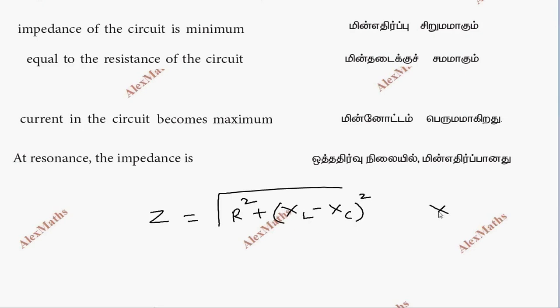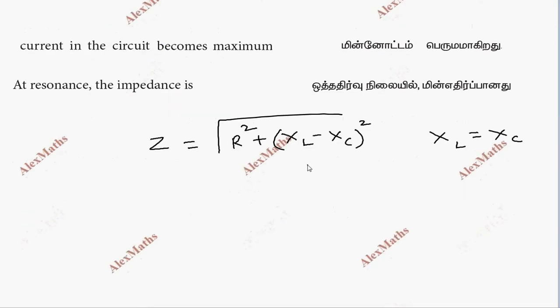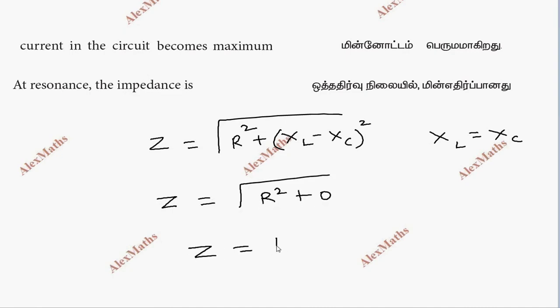At resonance, XL equals XC, so their difference is zero. The impedance Z equals root of R squared plus zero, which means Z equals R. The circuit becomes purely resistive at resonance.